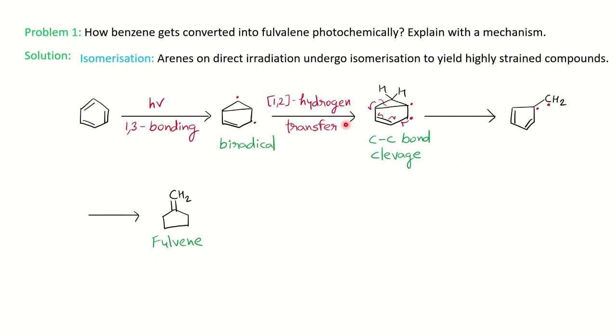So whenever the question comes benzene on isomerization, give the mechanism. You can take this example, benzene conversion to fulvene, which is a strained molecule. You know 6-membered molecules are more stable than the 5-membered ring. But under photochemical irradiation we get all such kind of strained molecules which is not possible under thermal condition. So this is one type of question.